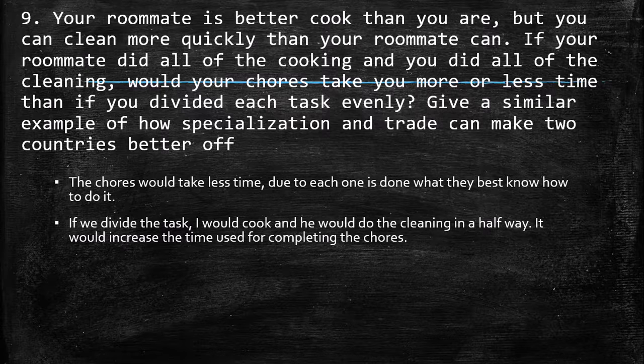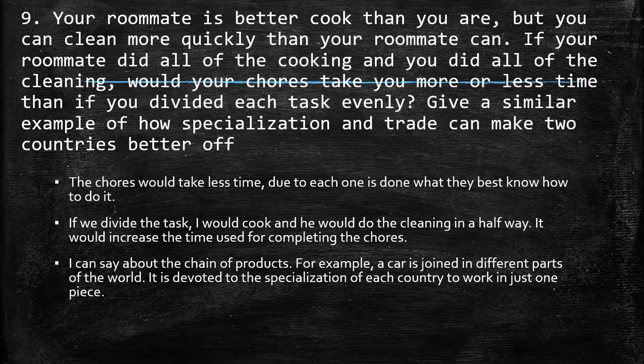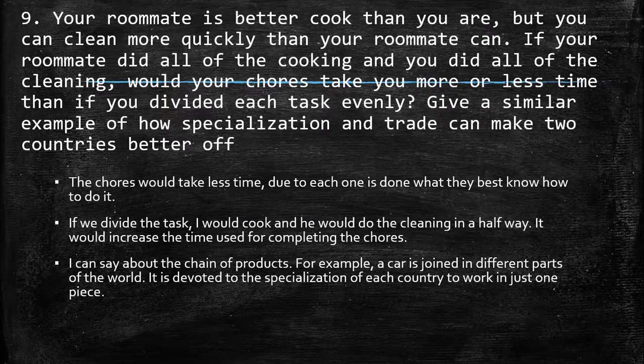When we talk about an example of how specialization and trade can make two countries better off, what came to my mind is the case of joining in the production of a car. We know what the chain of products is — for example, a car, a computer, a laptop, or other kinds of machinery. The chain process is not only in one country but also around the world. The same good passes through pieces around the world because in each country they specialize exclusively in one part, so specialization makes the countries better off.